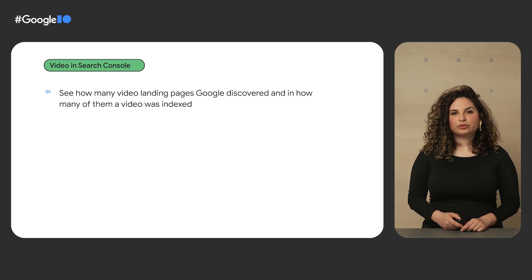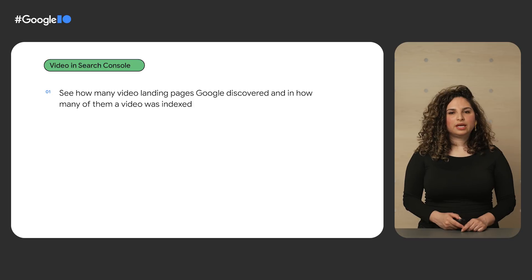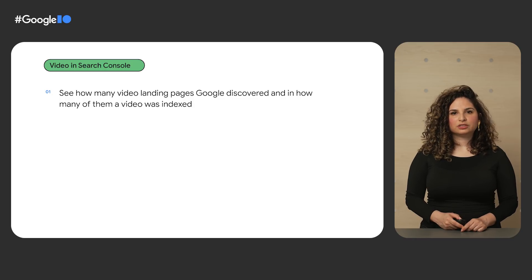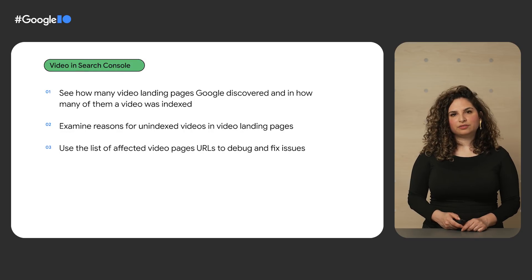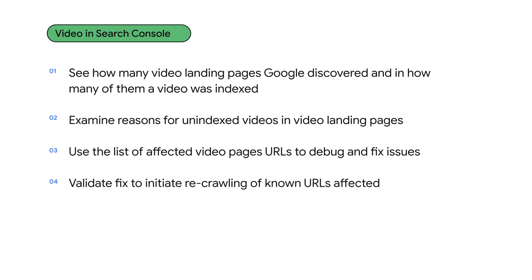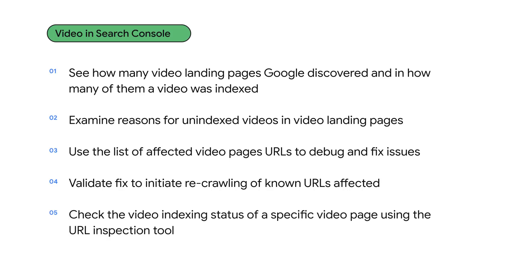To summarize, with the new tools, you will be able to see how many video landing pages Google discovered and in how many of them a video was indexed, examine reasons for unindexed videos in video landing pages, use the list of affected video pages URLs to debug and fix issues, validate fix to initiate recrawling of known URLs affected by the issue, and check the video indexing status of a specific video using the URL inspection tool. I hope this helps streamline the publishing of videos on your site, bringing you more users through Search.